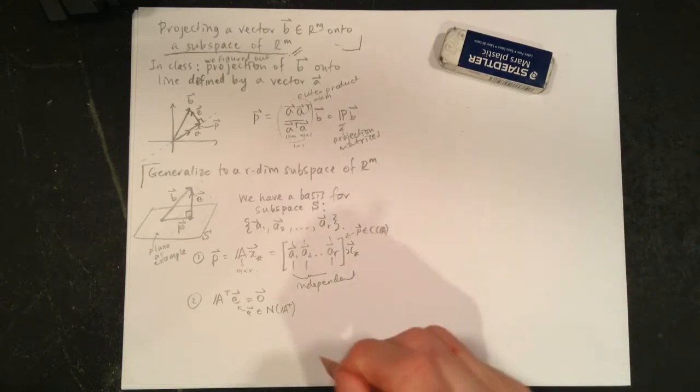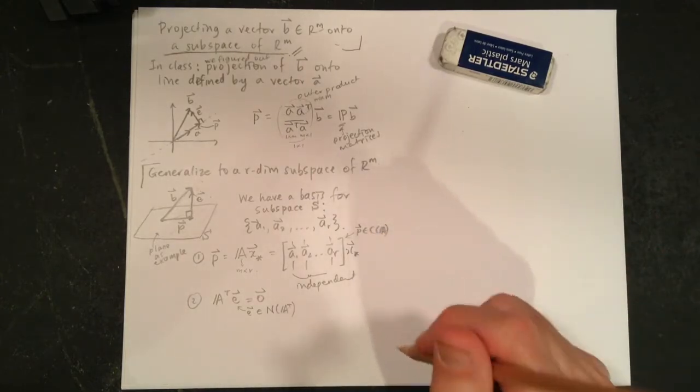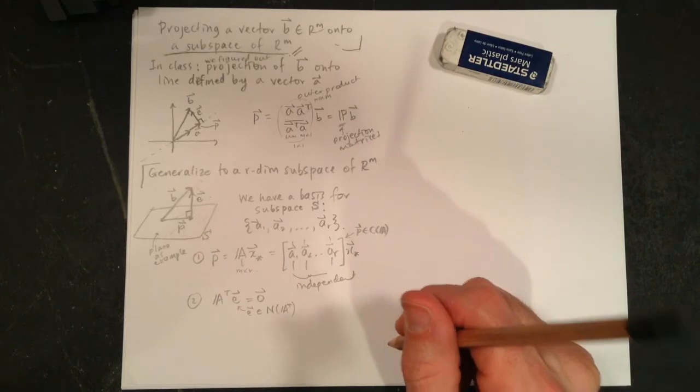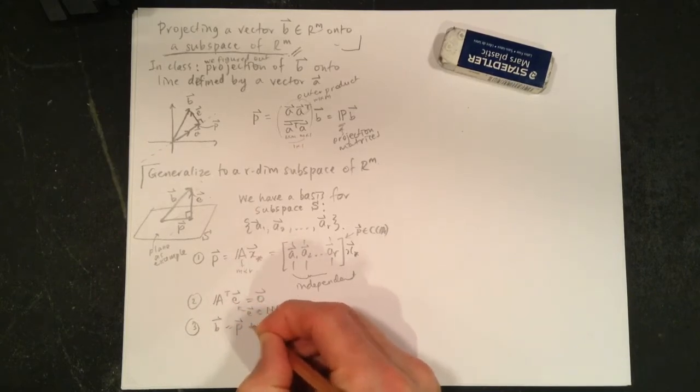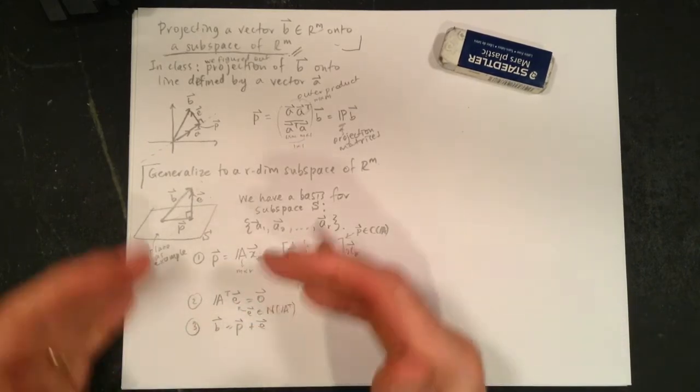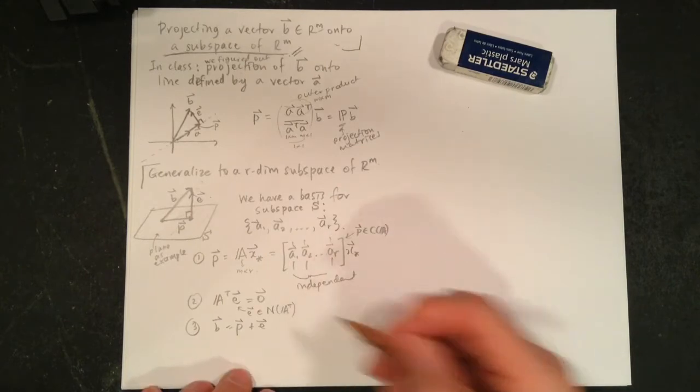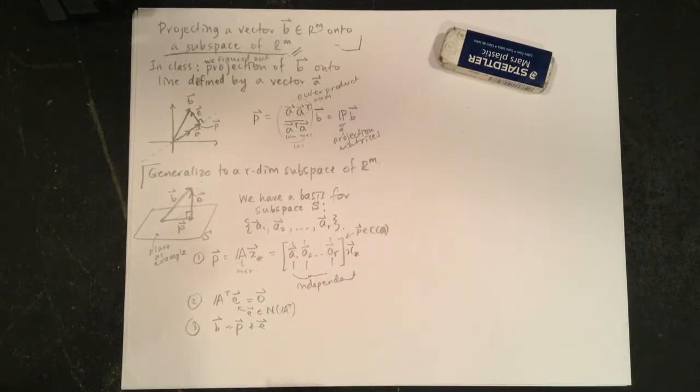So E is in the left null space, and here what we're really saying in terms of our big picture is P is in the column space of A, where we've made this A. Because we have these structures, and because we have three, that B is P plus E, so this is exactly the setup for the normal equation. Exactly the same. So let's do it.